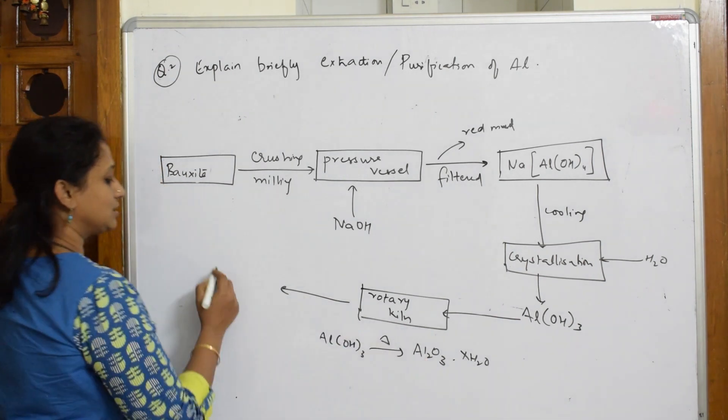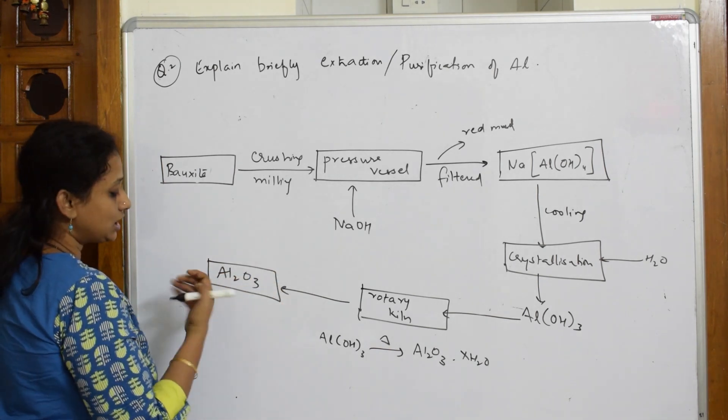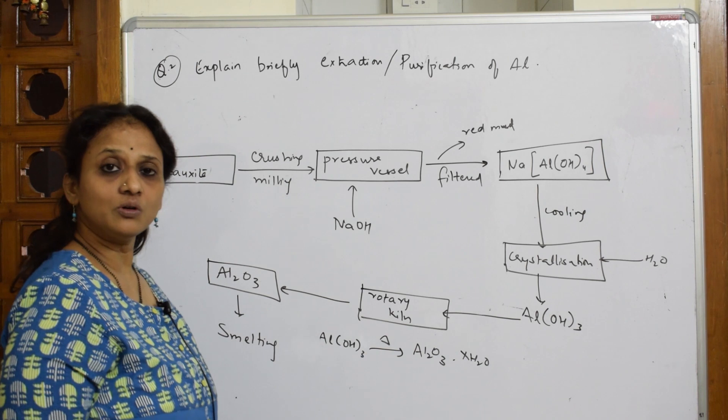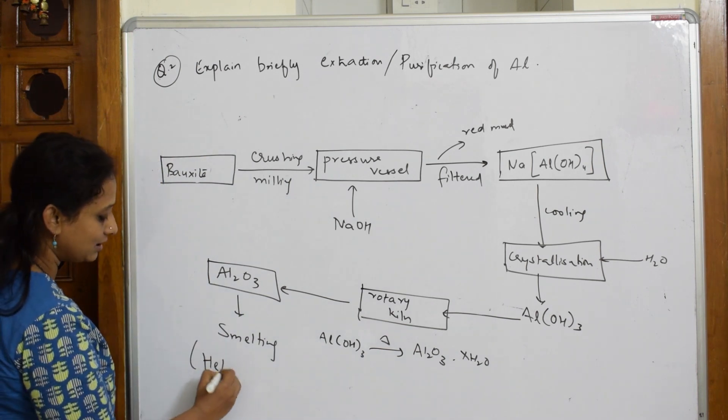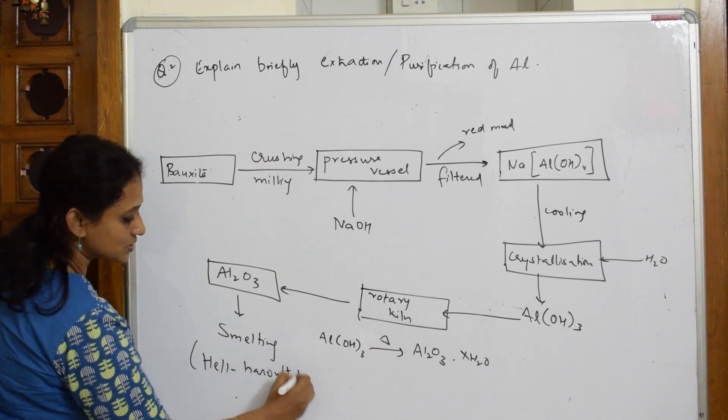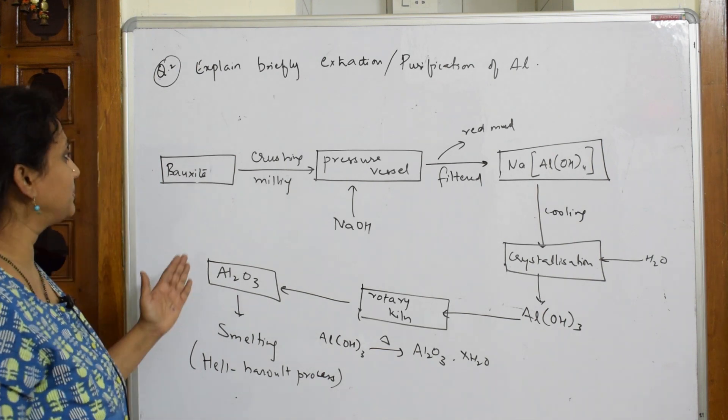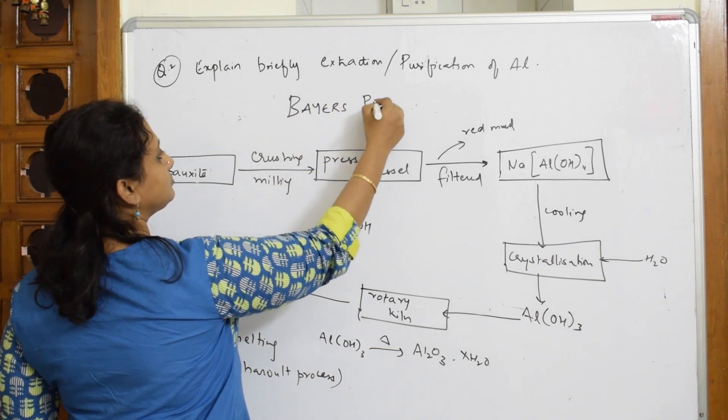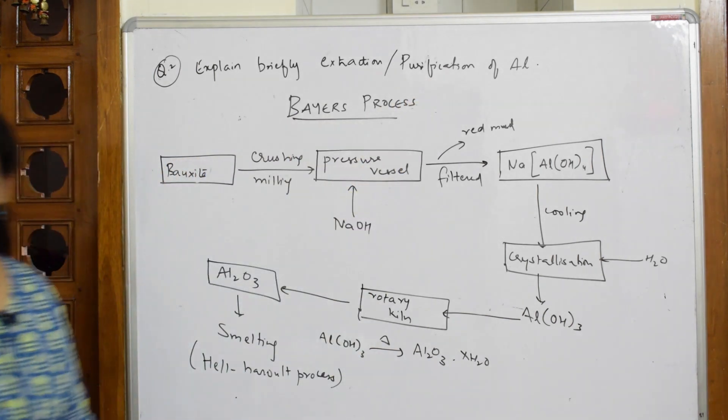So this aluminium oxide which is formed is Al2O3. This Al2O3 is sent for smelting, which we do or the process which is used or the cell which we use for smelting is Hel-Haroult process. That is it. I will be doing this in the next video. So this is your Bayer's process.